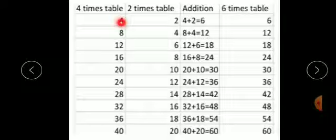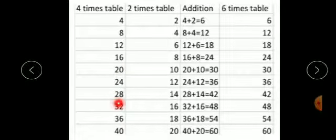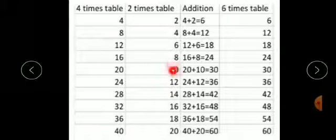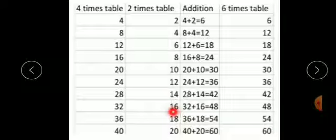4 times table: 4 ones are 4, 4 twos are 8, 4 threes are 12, 4 fours are 16, 4 fives are 20, 4 sixes are 24, 4 sevens are 28, 4 eights are 32, 4 nines are 36, 4 tens are 40. Then write the 2 times table: 2 ones are 2, 2 twos are 4, 2 threes are 6, 2 fours are 8, 2 fives are 10, 2 sixes are 12, 2 sevens are 14, 2 eights are 16, 2 nines are 18, 2 tens are 20.